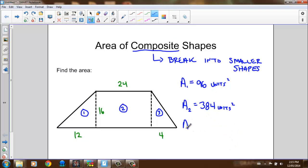The third shape is another triangle. So again, base times height divided by 2. The base of this triangle is 4 units, the height again is 16. Divide that by 2, and I get an area of 32 units squared.